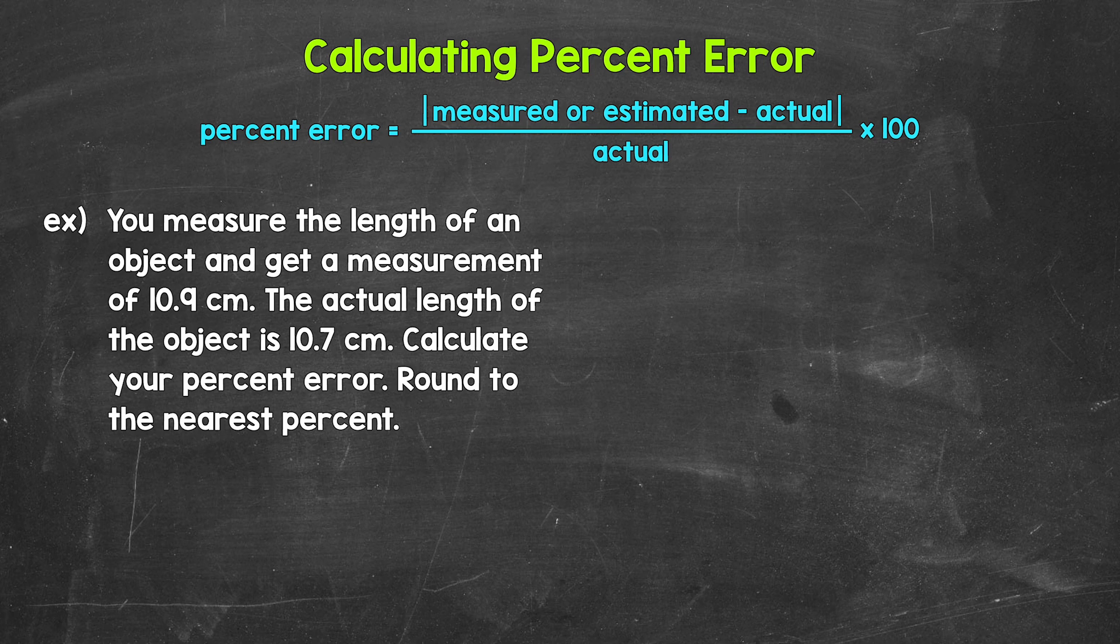Let's jump into our example. You measure the length of an object and get a measurement of 10.9 centimeters. The actual length of the object is 10.7 centimeters. Calculate your percent error. Round to the nearest percent.